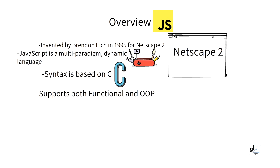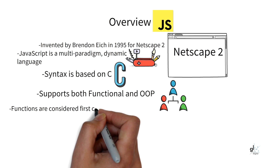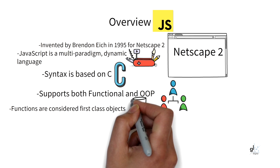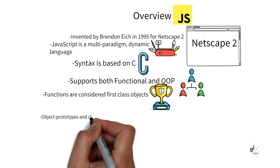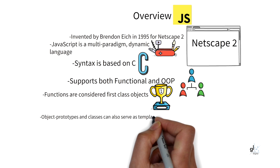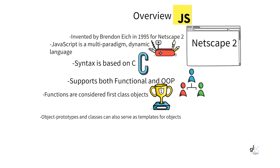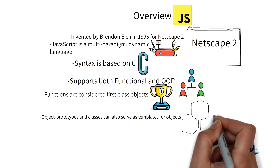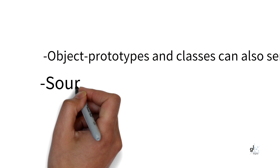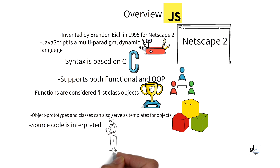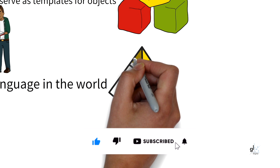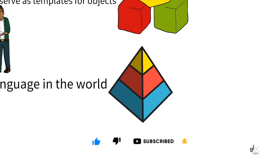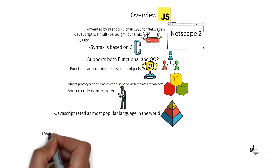It supports both object-oriented programming and functional programming. In JavaScript, functions are considered first-class objects and can be created through expressions and can be passed around like any object. Object prototypes and classes can also serve as templates for objects in JavaScript. JavaScript is lightweight and is not a compiled language — the source code is never changed into bytecode before it is executed. JavaScript is consistently rated by reputable sources as the most popular programming language in the world.